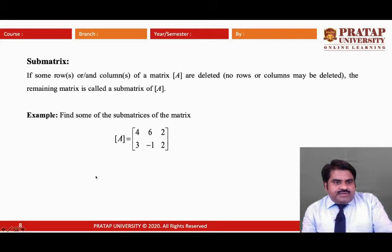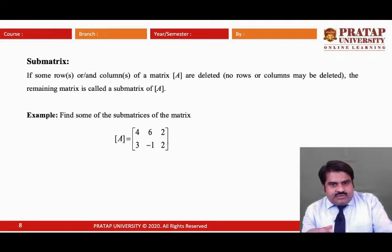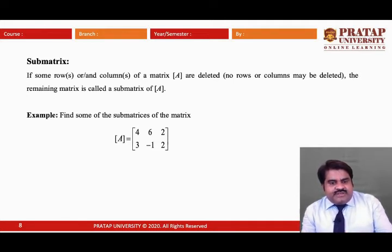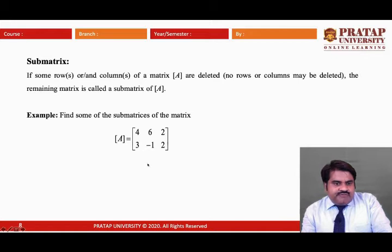Now we discuss the submatrix. If from any matrix we remove some rows or some columns, the remaining matrix is called a submatrix. We can also keep all rows and columns — the matrix itself can also be called a submatrix. In the given example, if we split matrix A into other matrices, each resulting matrix is called a submatrix of A.